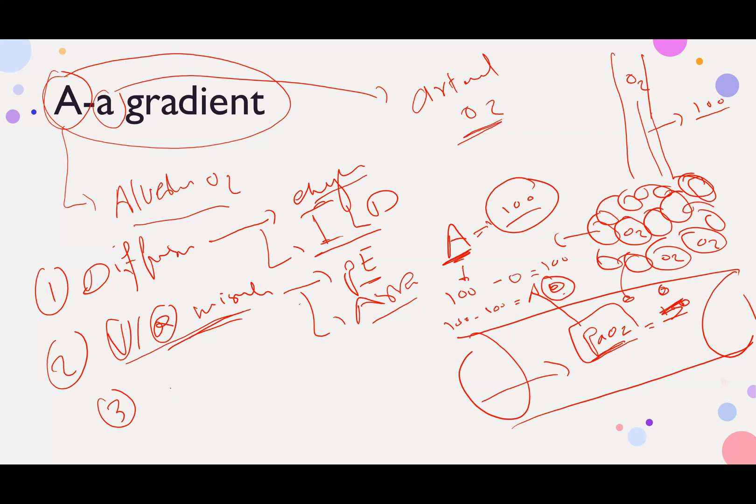The third cause is shunting. Shunting is like right to left shunt, congenital heart disease. It's cyanotic heart disease. Those patients, if you give them oxygen, their desatting will not improve because you still have the shunt.